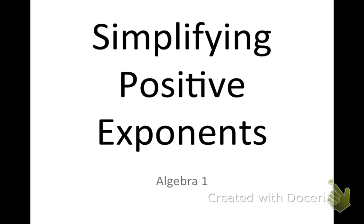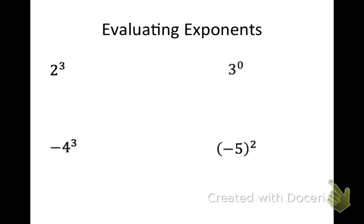Simplifying positive exponents. We're going to start off with a quick review of exponents, just evaluating. In this first problem we have 2 to the third power. The 3 here is our exponent. That just means to take 2 times 2 times 2. So we're going to multiply the base, 2, by itself 3 times. That gives us 8.